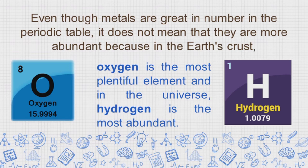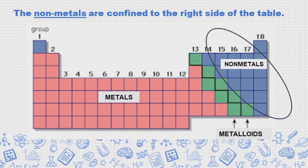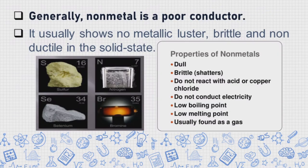And in the universe, hydrogen is the most abundant. The non-metals are confined to the right side of the table. Generally, non-metal is a poor conductor. It usually shows no metallic luster, brittle, and non-ductile in the solid state.